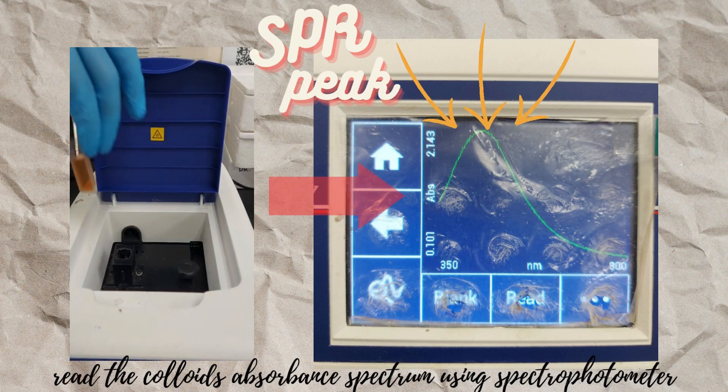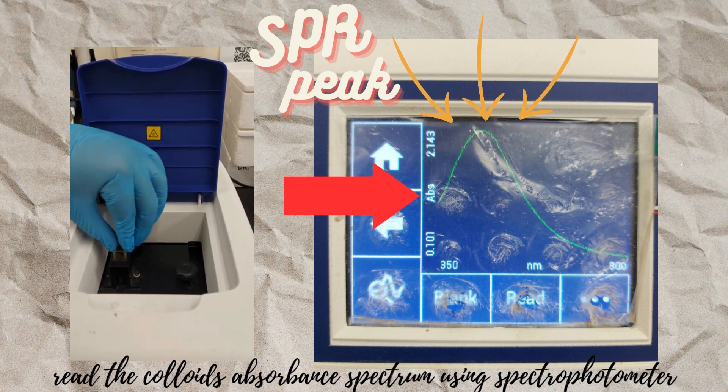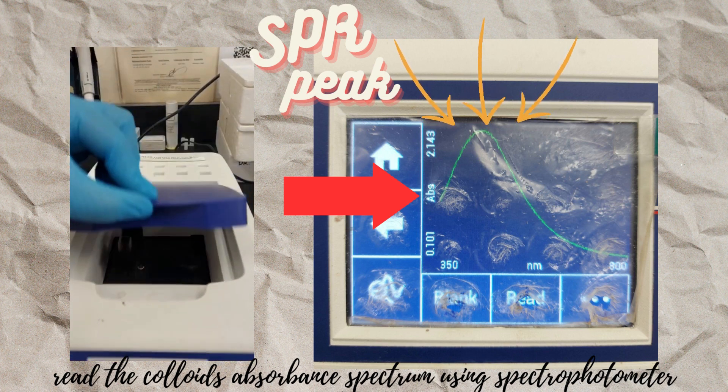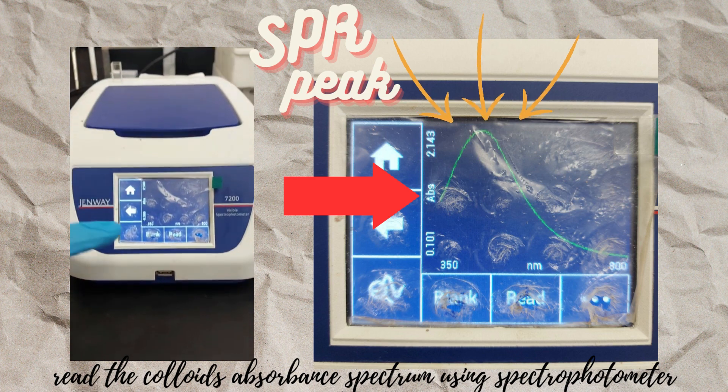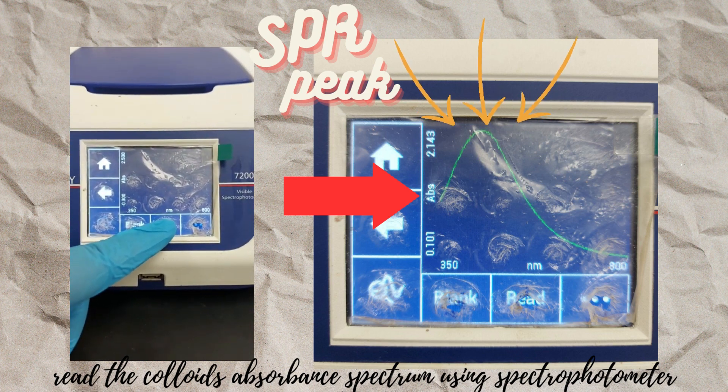Finally, you can confirm your silver nanoparticle's formation using UV Visible Spectrophotometer. The spectrum of the graph should contain a surface plasmon resonance peak like this one.